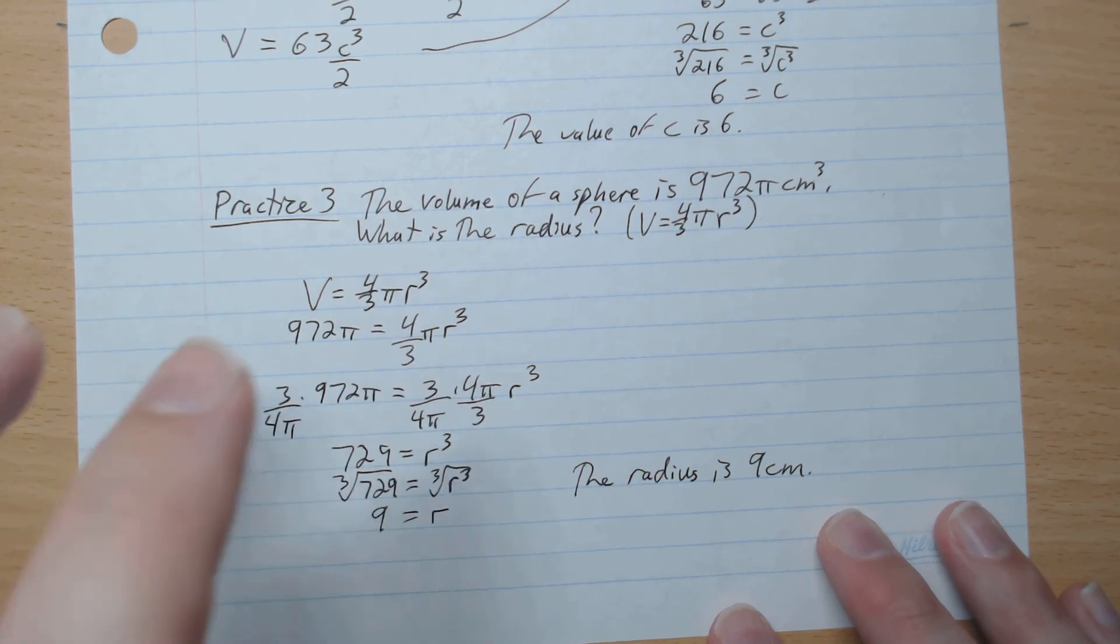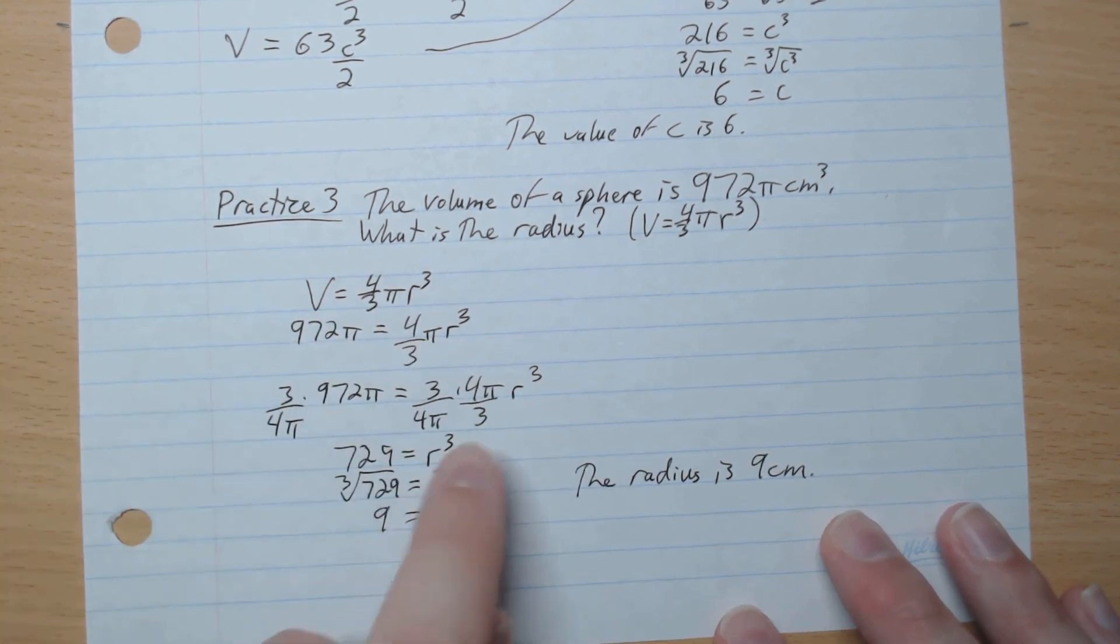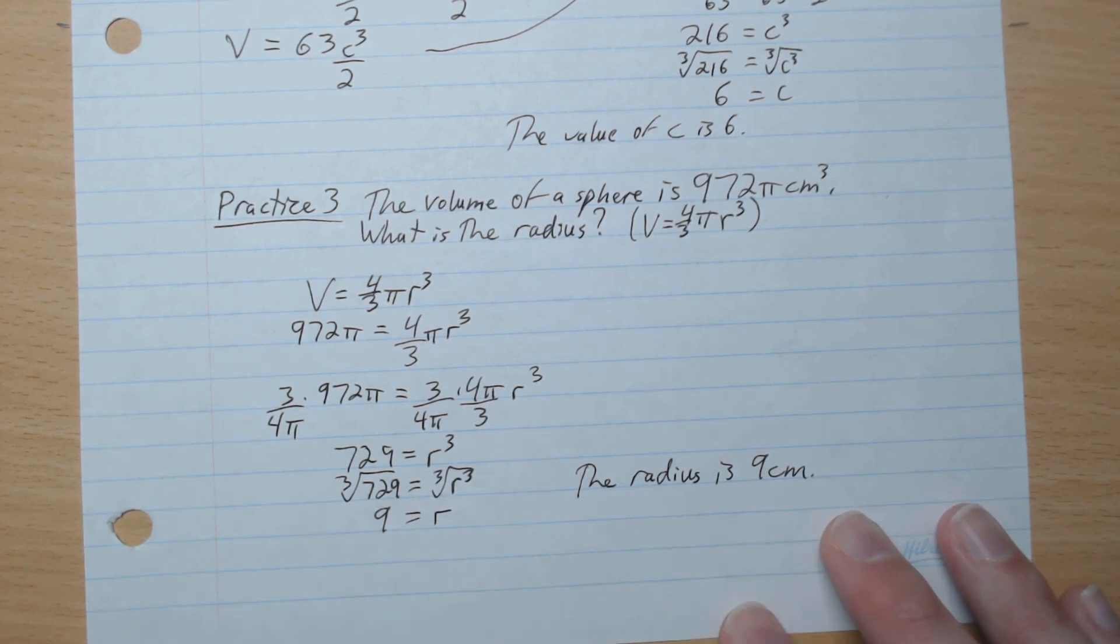So times 3 to both sides, divide by 4 to both sides, divide by π on both sides. So this gives r³ on its own. This simplifies to 729. Cube root both sides, and the radius is 9 centimeters.